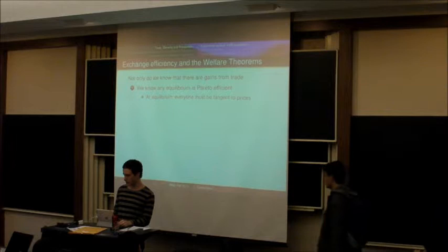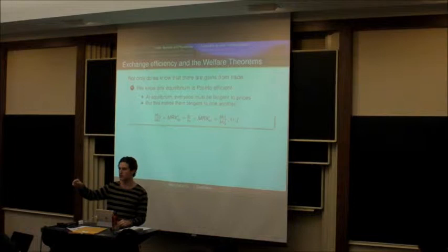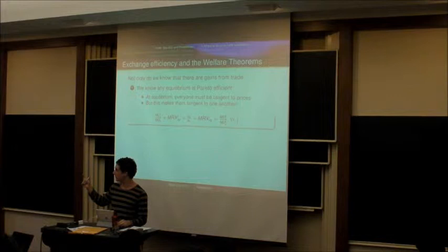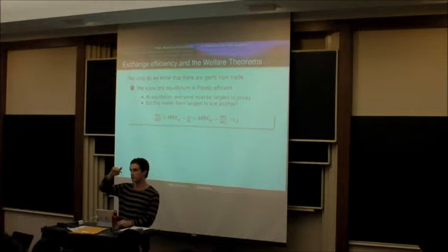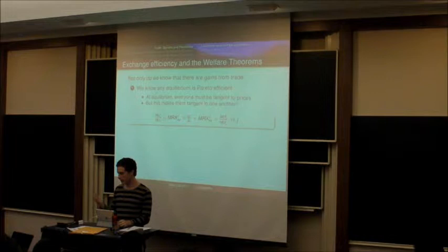At equilibrium everyone is going to set their marginal rates of substitution between goods—this should be MRS not MRF, sorry. The marginal rates at which they're willing to substitute different goods are going to be equal to the ratio of the prices, and because everybody does that we know everyone's marginal rates of substitution will be equal to everybody else's. And those are just the efficiency conditions for an economy.